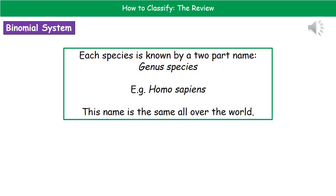Every species present on Earth has a two-part name, which is its binomial name. That two-part name is made up of the genus and then the species. The genus always gets a capital letter, species always a lowercase letter, and you should write it in italics or underline it.